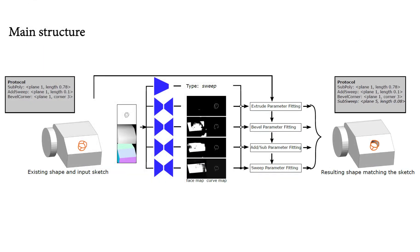Here we show the main architecture of Sketch2CAD. Given an existing shape and input sketch strokes, we first obtain the maps of sketch and local context, which are fed to the operator classification and segmentation networks. The classified operator type is then used to select the corresponding feature maps, based on which the parameters defining the operator are fitted via an optimization to recover the sketched operation instance.